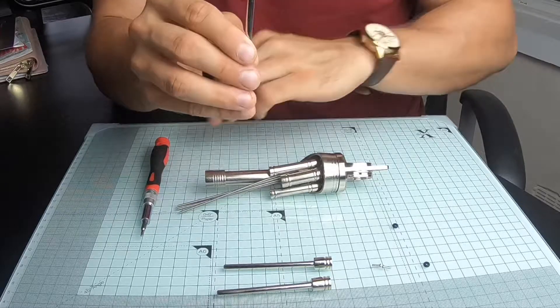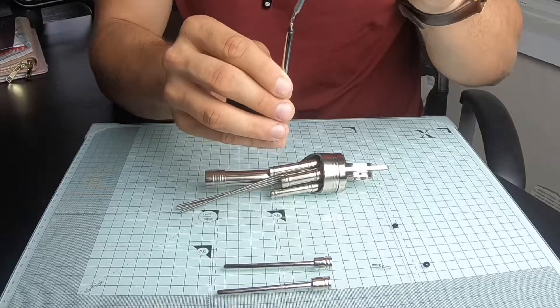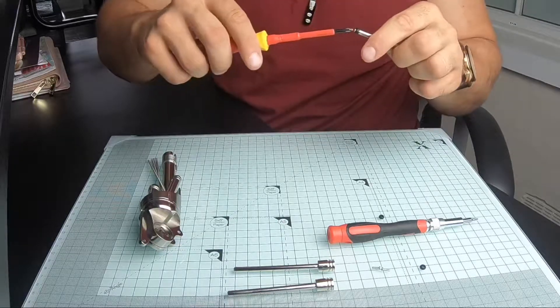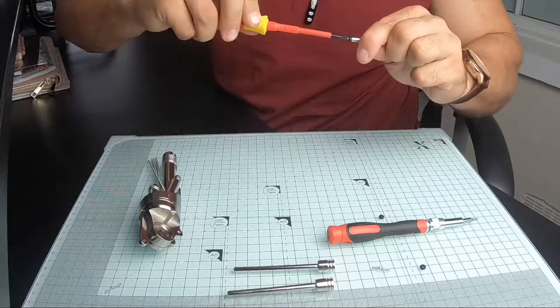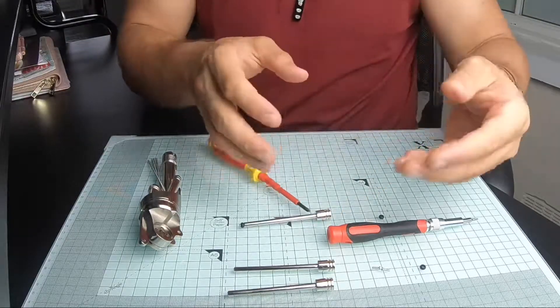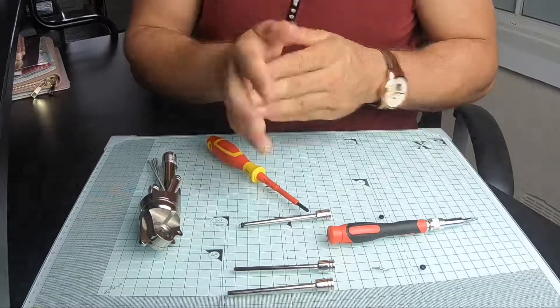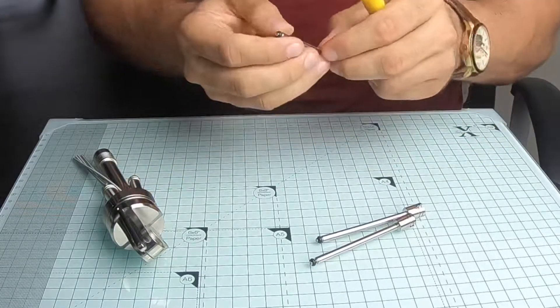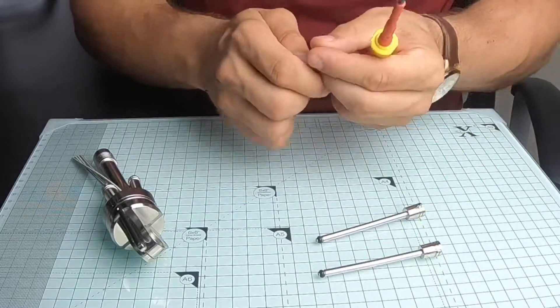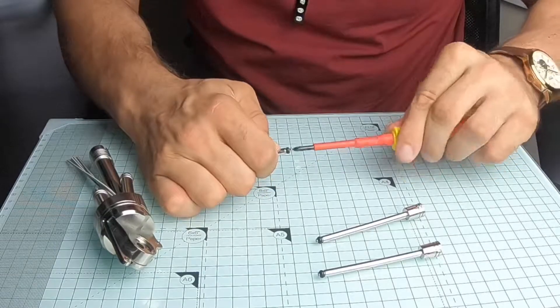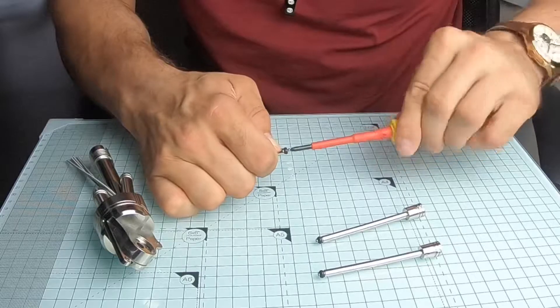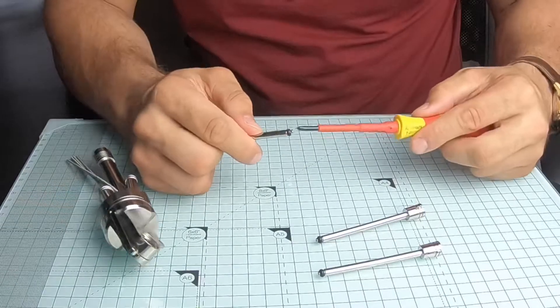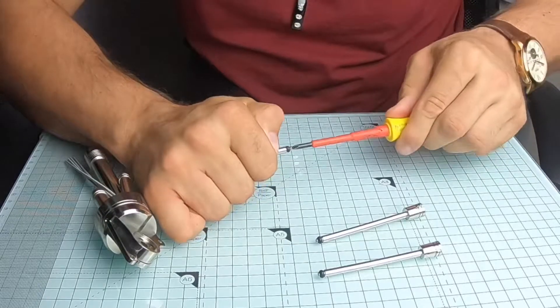Make sure you don't over tighten it because we want to have some movement there. That one's done, and then you do the same with the other two. That's number three complete. Not too tight, so the little washer can still move. I'm just going to double check one of them because it wasn't on too well. Obviously don't over tighten it, but the screws do need to be in well.